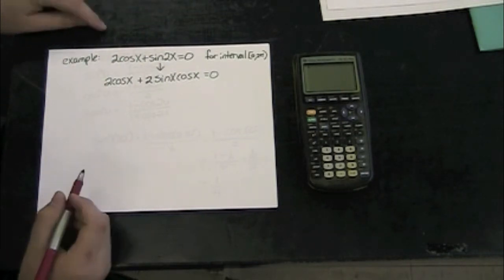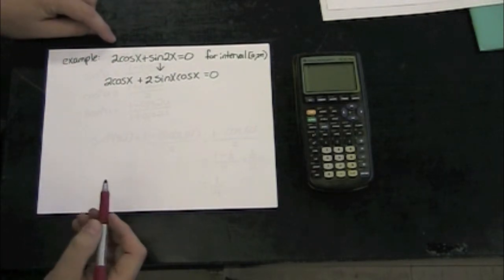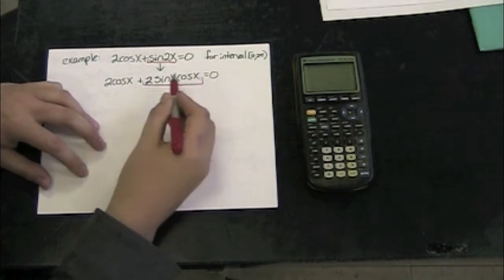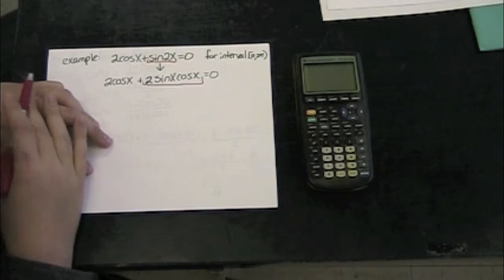I can also use this to solve some equations. For example, if I have the equation 2 times cosine of an angle plus sine of 2 times that angle is equal to 0, I can rewrite my sine of 2x term using the formula to 2 times the sine of x cosine of x equals 0.